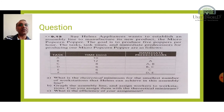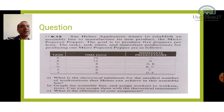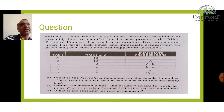Here is the example: Shoe Helms Appliances wants to establish an assembly line to manufacture its new product, the micro popcorn popper. The goal is to produce five poppers per hour. The task times and immediate predecessors are as follows: one hour, five poppers are being produced. For task A it takes 10 minutes — if times are given in minutes, keep them in minutes when finding the cycle time.